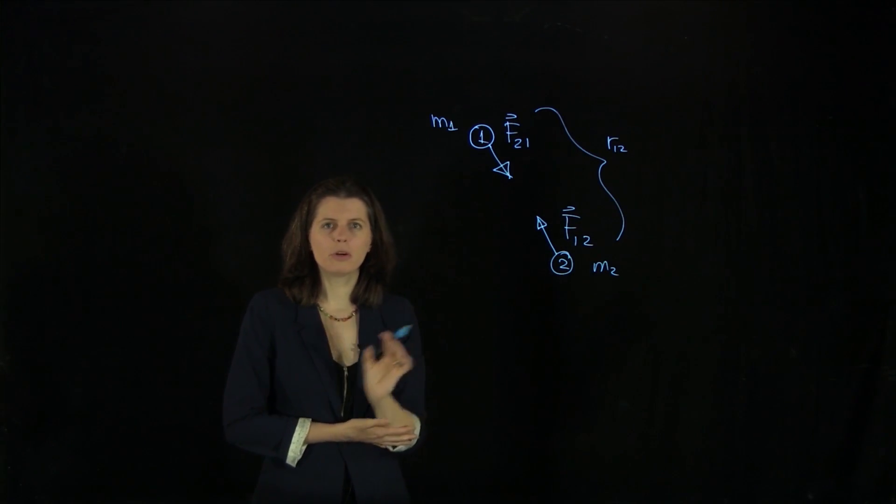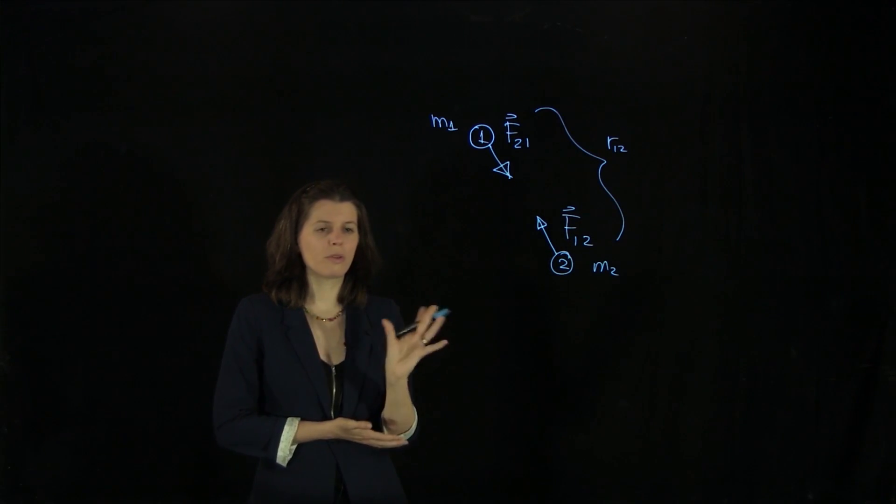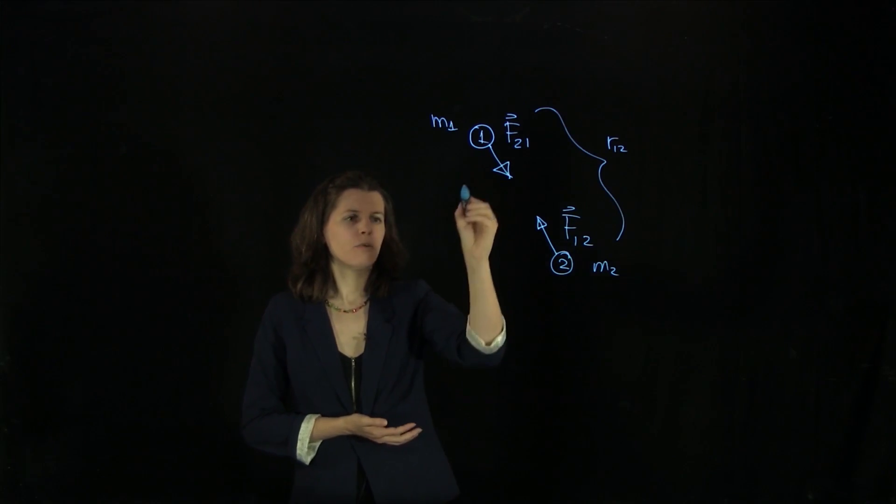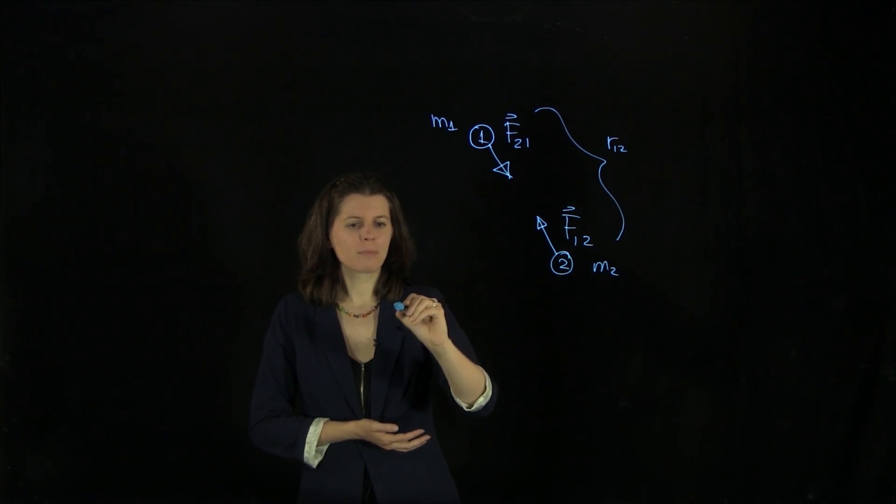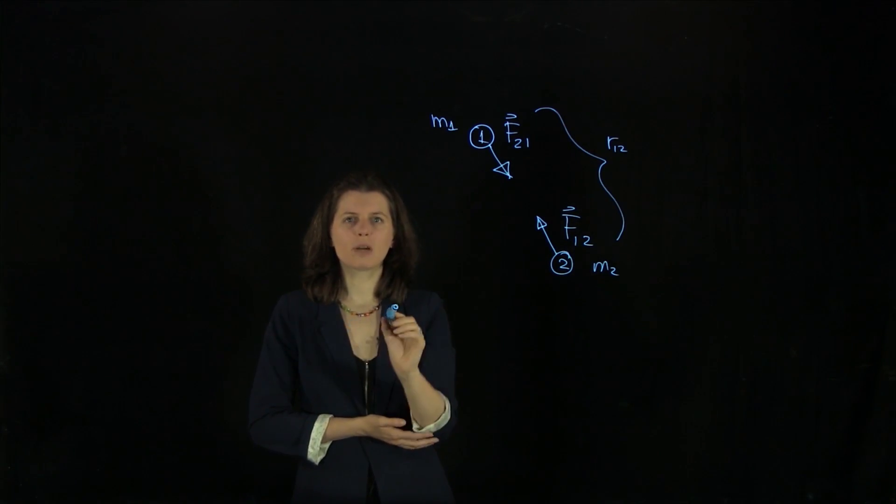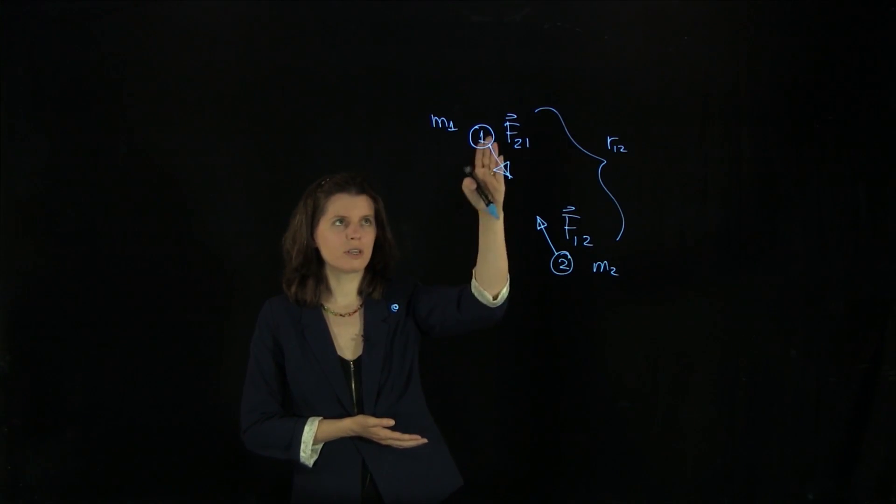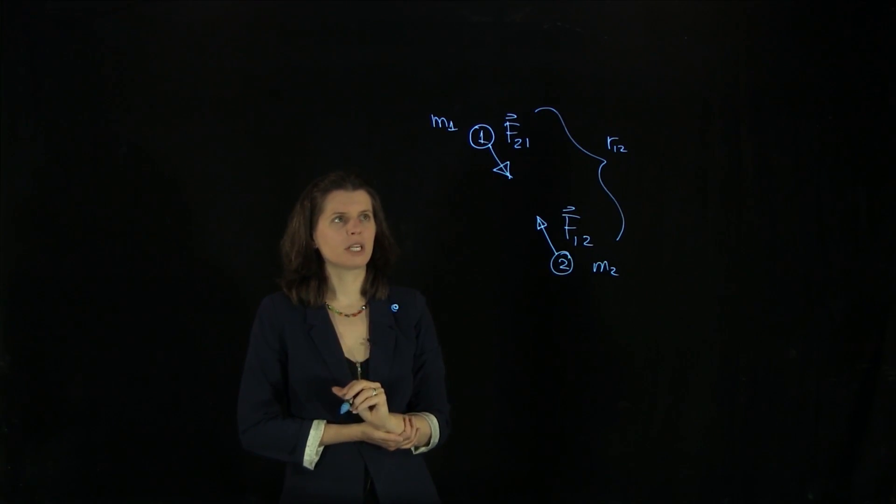Now we need to do one more consideration, and then we can derive this. We need to pick some kind of origin from where we are considering these two objects to be.